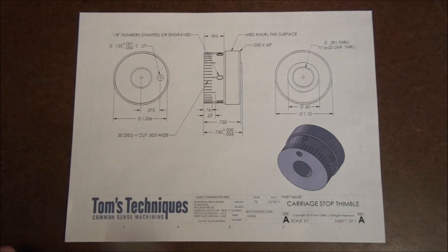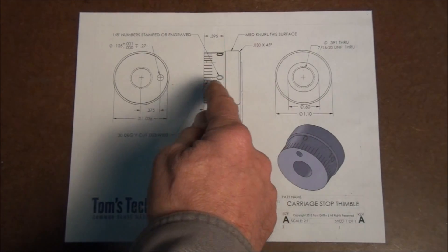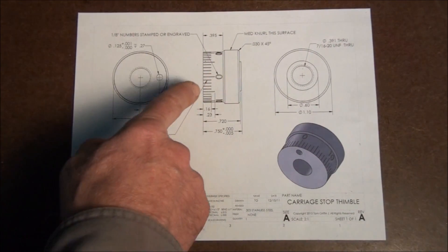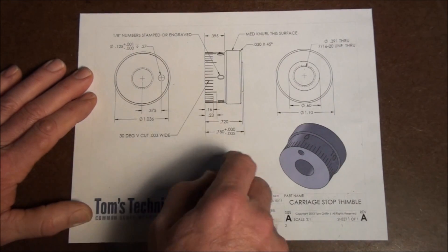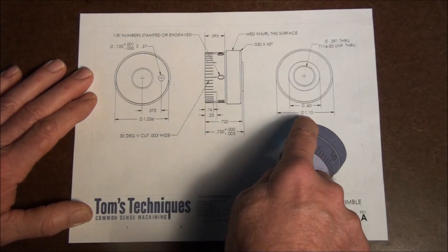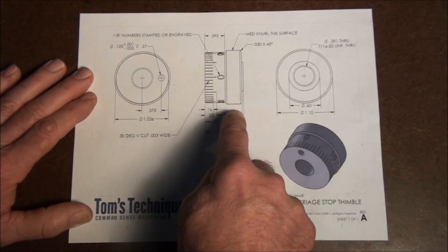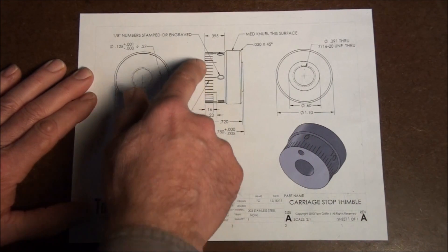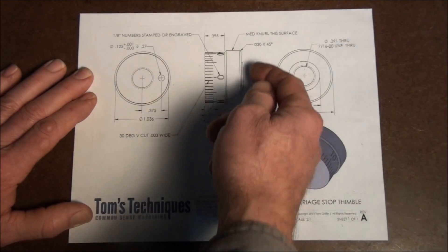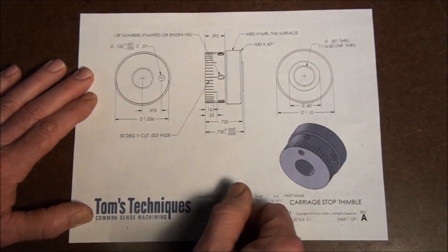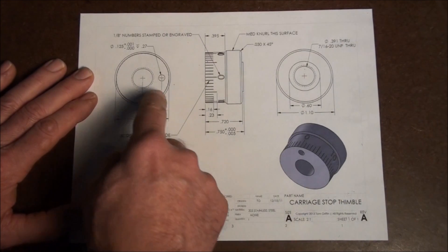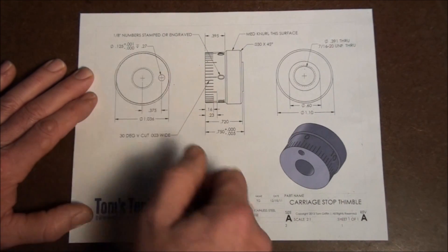We have some basic turning to do. We have to turn this diameter here down, 1.036. We have a diameter here we have to turn down for the knurl, 1.1 inches. We have some facing to do on both ends. This end we have a raised portion we have to leave behind. We have a reamed hole here. We have a tapped hole in the center.